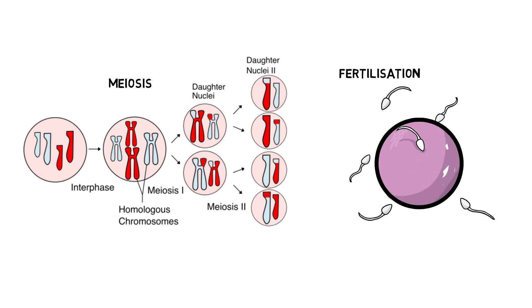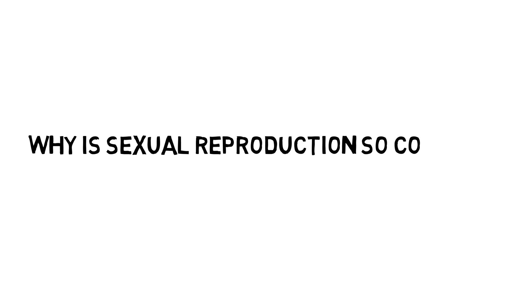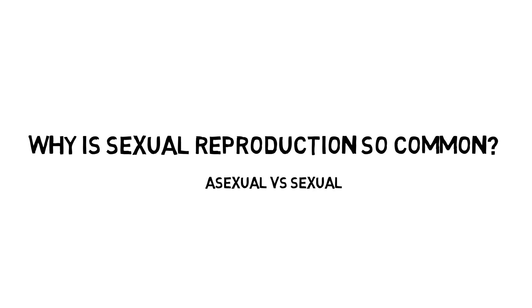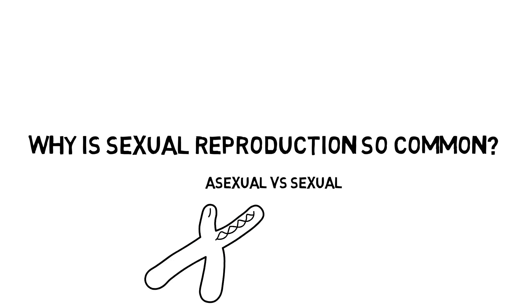We first need to ask the question: why is sexual reproduction so common? Because asexual reproduction, where offspring make genetic clones of their parents, seems simpler and more efficient, seeing as you don't need another organism to input their DNA. But most multicellular organisms are not solely asexual — they at least also have sexual reproduction, if not exclusively sexually reproduce. It's been decided that the reason they do this is that sexual reproduction offers many evolutionary advantages.